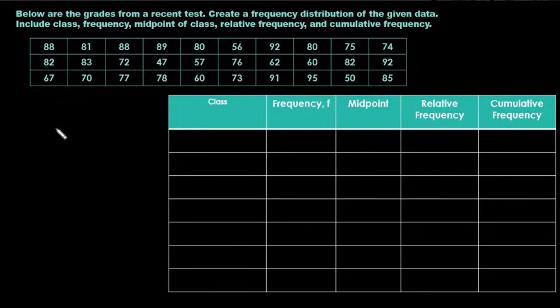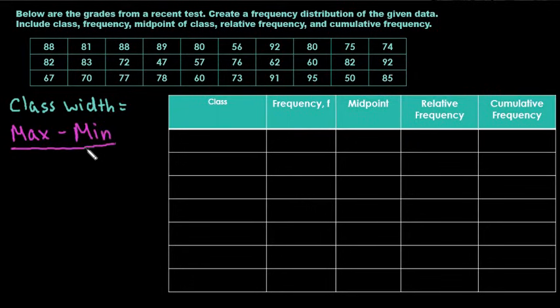In order to set this up, what we want to start with is we want to find our class width. To find the class width, you are going to take your maximum value minus your minimum value and divide it by the number of classes.